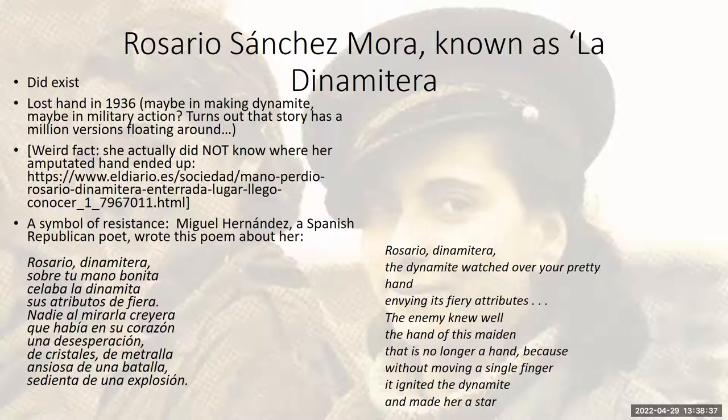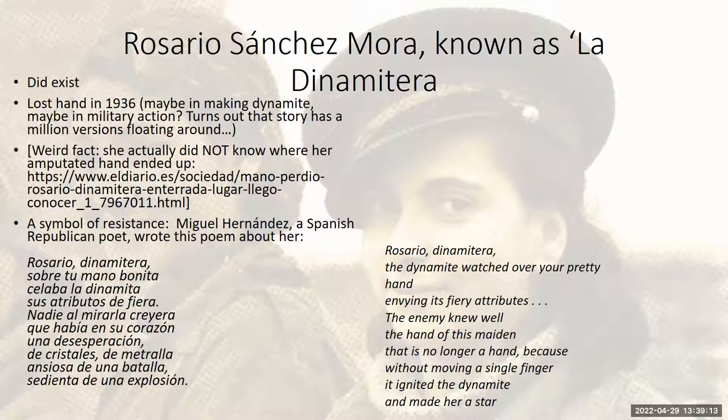Rosaria Sanchez-Mora, also known as La Donna Matera, did actually exist. She lost her hand in 1936, maybe making dynamite, maybe in a military action — that story also has a million versions floating around. She actually didn't know where her amputated hand ended up until about 2014. She became a symbol of resistance for the Republican Army, and Miguel Hernandez, a Spanish Republican poet, wrote a poem about her that was fairly popular. She was a pretty important figure in terms of the Republican side of the Spanish Civil War and particularly how women were understood as being part of that.